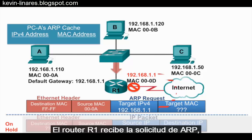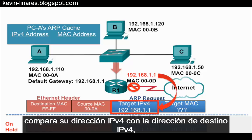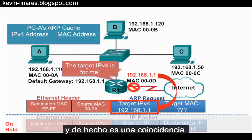Router R1 receives the ARP request, compares its IPv4 address against the target IPv4 address, and it is indeed a match. It is the target of the ARP request.